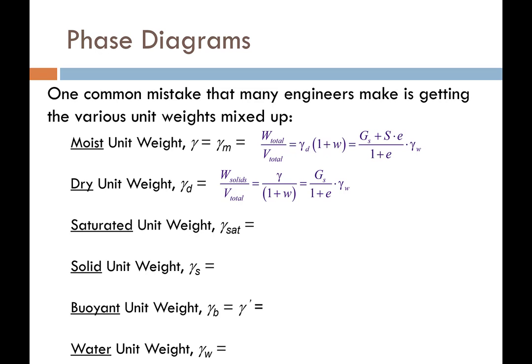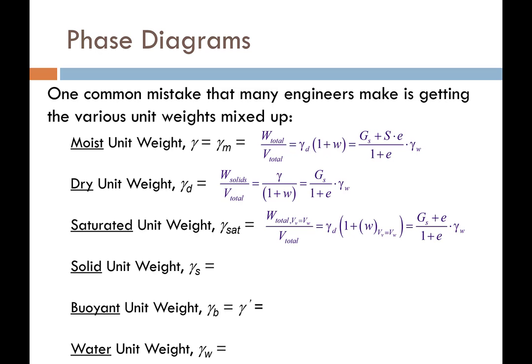The saturated unit weight is the moist unit weight of the soil when the degree of saturation equals one — meaning all void space is filled with water. The equations to compute it use the total weight of the soil given that the volume of voids equals the volume of water. In this condition, the moisture content corresponds to the water content when the soil is fully saturated.